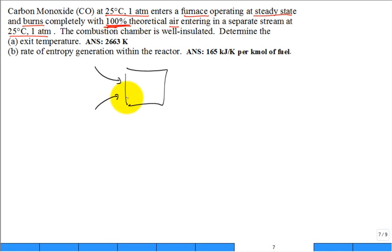This is pure CO, this is pure air - 21% oxygen, 79% nitrogen. Then out flow the products. The chamber is well insulated, so Q dot equals zero - no heat transfer. It's a combustion chamber, what is W dot? There's no shaft power in or out.